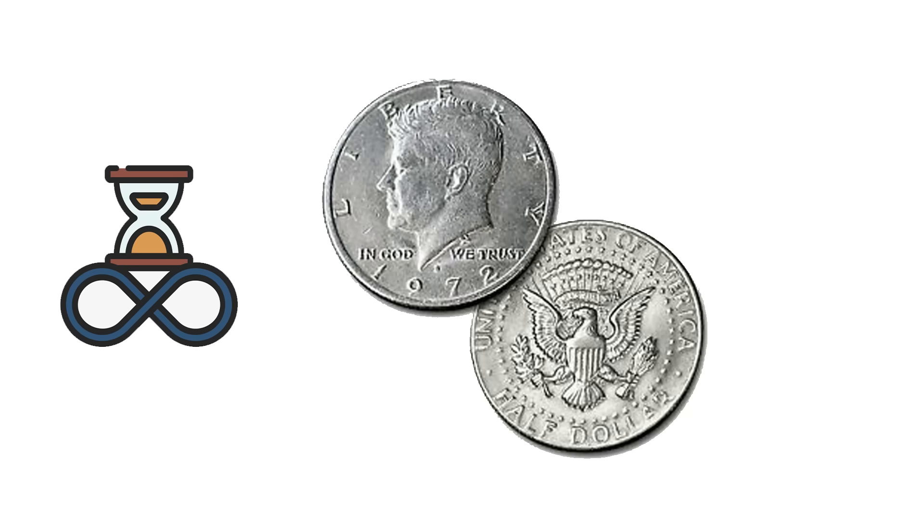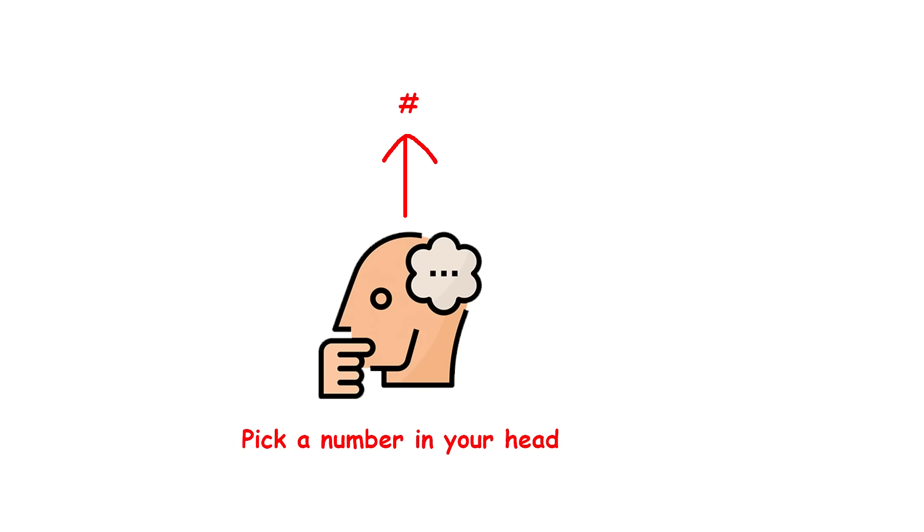On heads, it pays out double the prior round, and the game ends. On tails, the coin is tossed again. Now, how much would you pay to play this game? Pick a number in your head. It's more fun than if you just skip ahead.